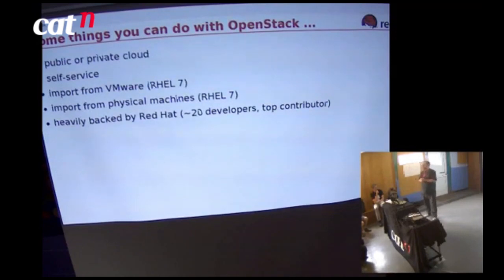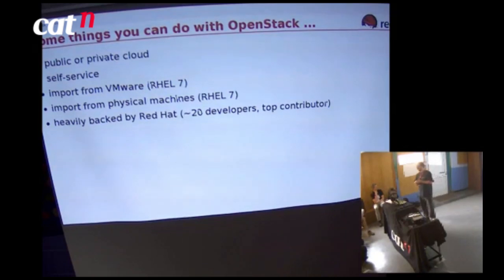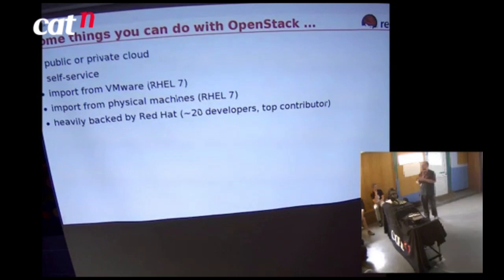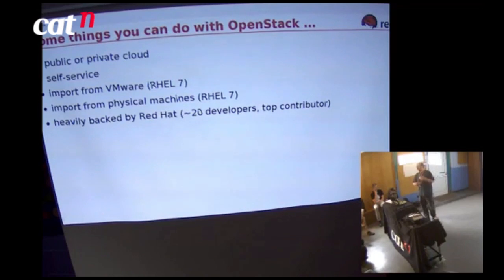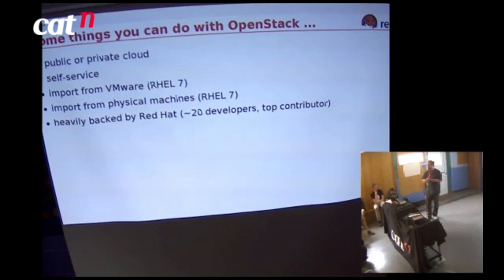Some things you can do with OpenStack: it's pretty much equivalent to Amazon EC2 in functionality. You can create public or private clouds. OpenStack is all about self-service — coming along without a charging component built in (you link it to your own charging system) and getting a VM very quickly. In RHEL 7, you'll be able to import from ESX and physical machines into OpenStack. Red Hat has 20-plus developers working full-time on OpenStack and is either the top contributor or within the top three.